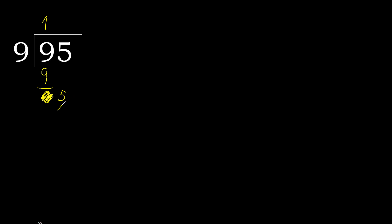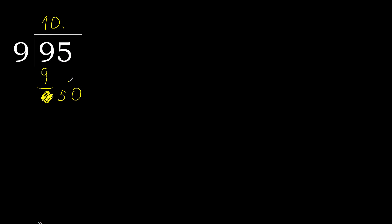5 is less, therefore next. Since it is not a whole number, we complete with 0 — 2 numbers, therefore 0.50. 9 multiplied by 6 is greater; multiplied by 5 is 45, which is not greater. Subtract to get 5.